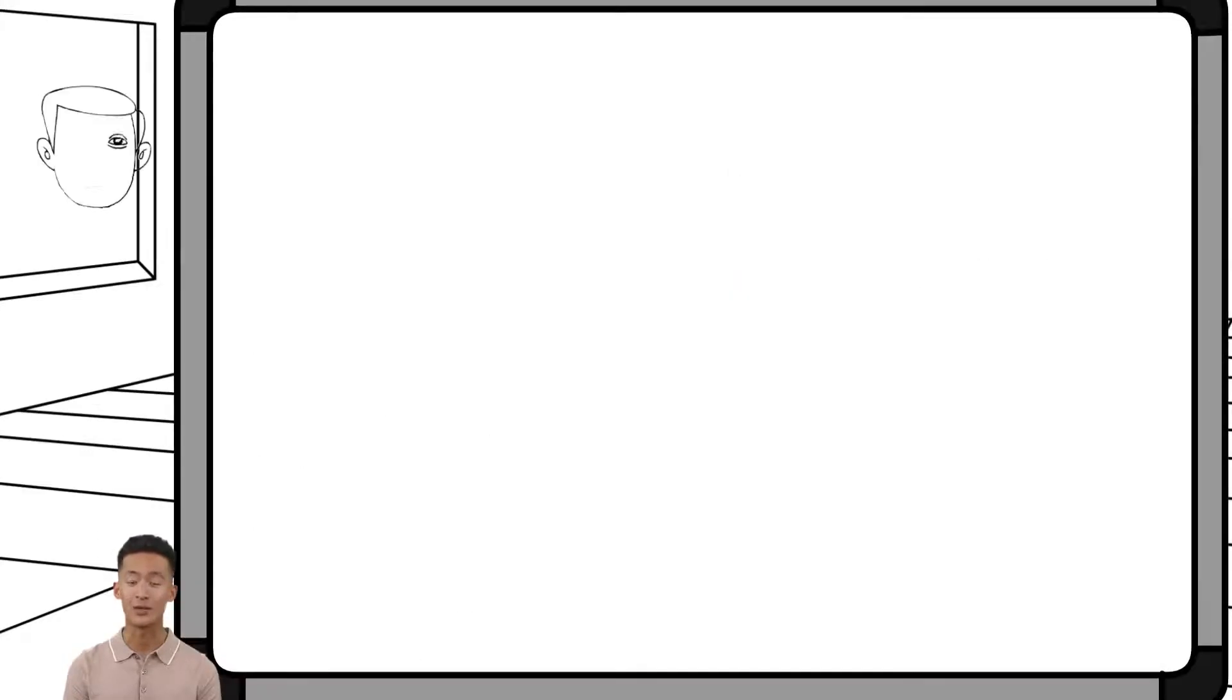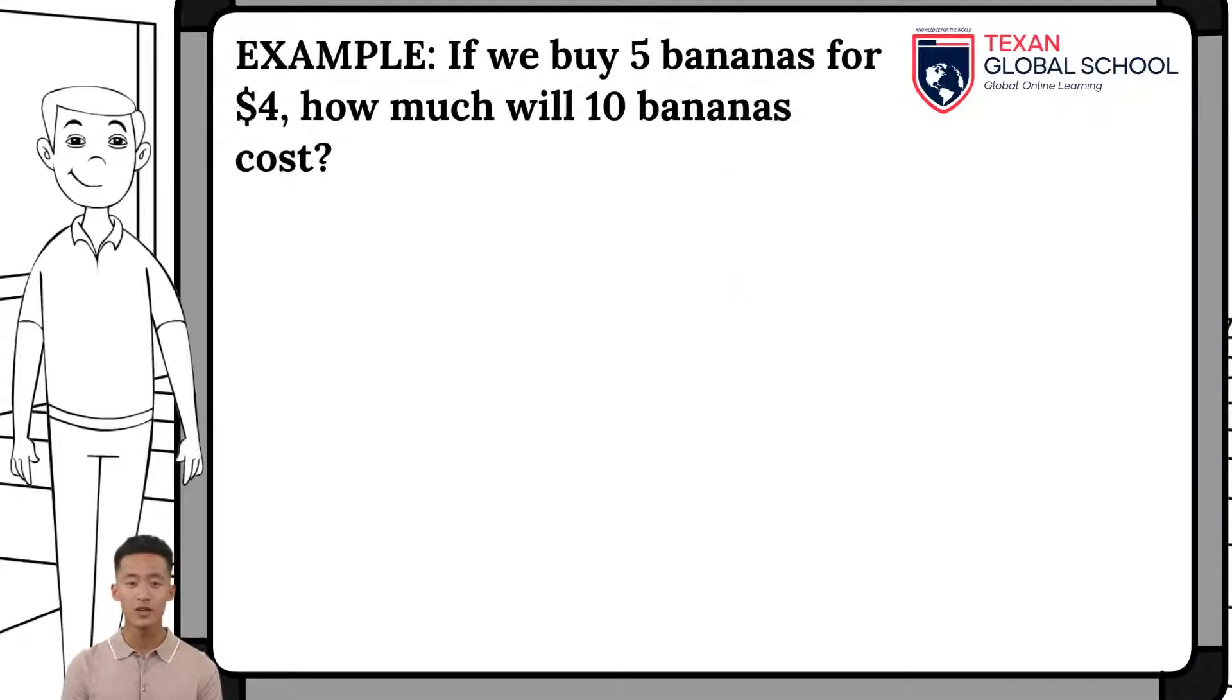Let's see an example. If we buy five bananas for four dollars, how much will ten bananas cost? Consider the Rule of Three. Since five bananas cost four dollars, ten bananas, how much will they cost, placing X or any other letter as our unknown?